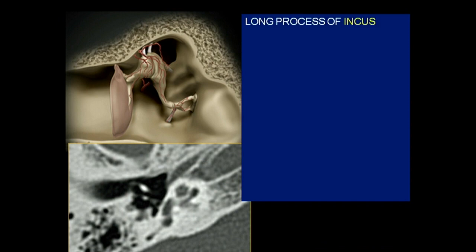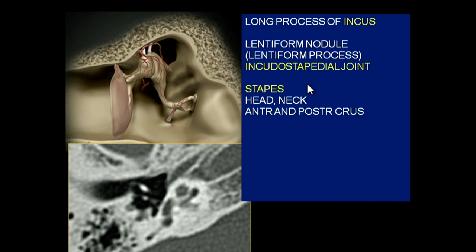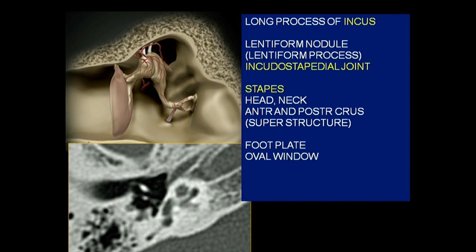The long process of incus comes here; this is the body of incus, the short process goes posteriorly into the attic, and here is the long process of incus which comes, bends a little, and ends in a small tiny nodular area called the lenticular process. It articulates with the stapes — the stapes has a head, neck, anterior crus, and posterior crus, together called the stapes superstructure. The footplate is separate, which is why it is differentiated; it articulates with the oval window via an annular membrane, forming the stapediovestibular joint.